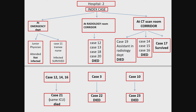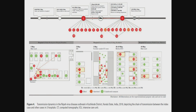In the ICU, another secondary case — case 21 — developed from those cases which acquired infection there. The article provides a detailed picture timeline of how the index case moved and how transmission occurred, which is very informative.